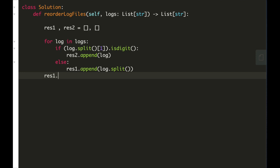Now we will sort first on the basis of our identifiers and we will use lambda for sorting. And now we will sort our letter-logs.